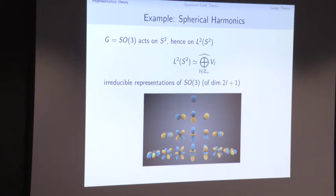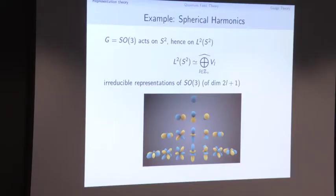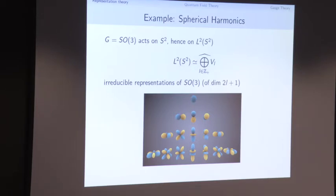A great example of an action of a non-abelian group is the group SO(3) — the group of rigid rotations of three-dimensional space — acting on the two-sphere by isometries. This lets us decompose functions on the sphere into irreducible representations of rotations. We can write any function on the sphere in a basis of elements living in an irreducible representation of rotations. All irreducible representations of SO(3) appear, labeled by an integer L, all of odd dimensions. This is the theory of spherical harmonics.